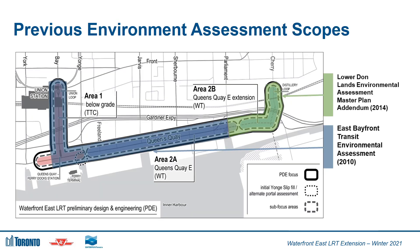There were two environmental assessments previously completed that covered the transit improvements in this corridor. In 2010, the East Bayfront Transit EA was completed, which covered improvements from Union Station to Parliament Street. And in 2014, the Lower Dawnlands Environmental Assessment Master Plan Addendum was completed, which covers improvements from Parliament Street to the Distillery Loop and into Villiers Island.